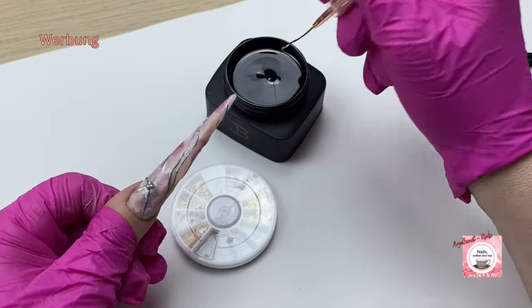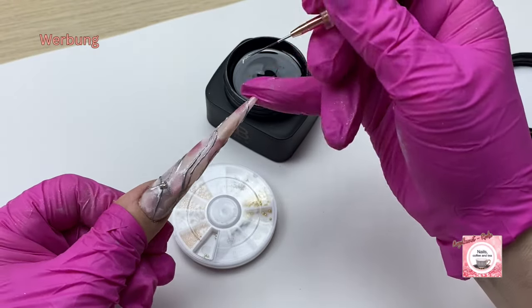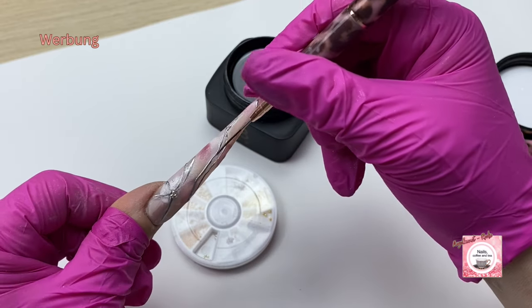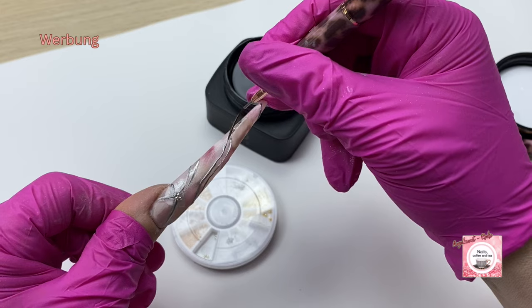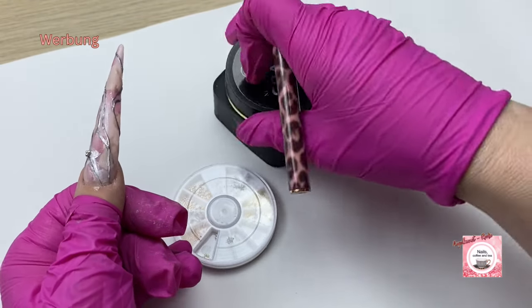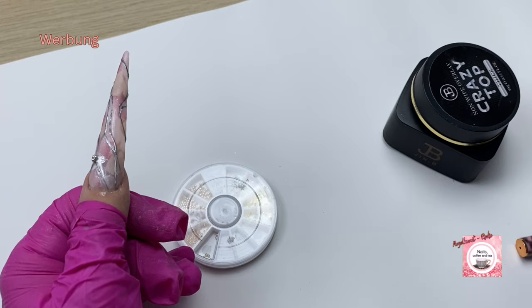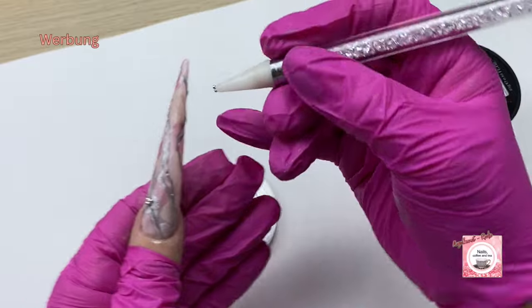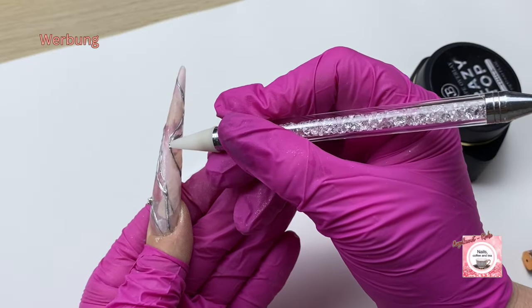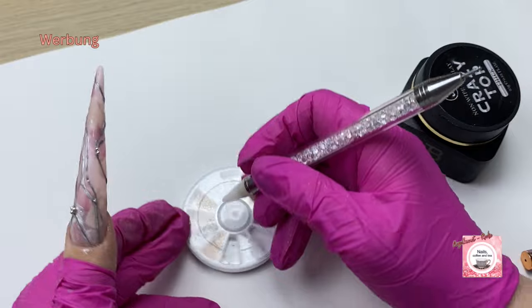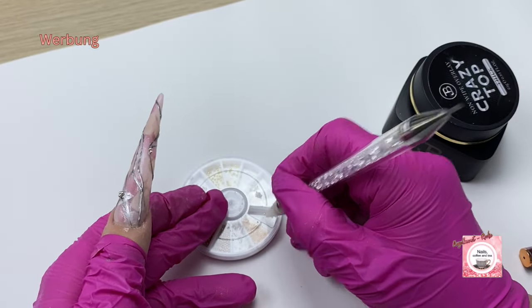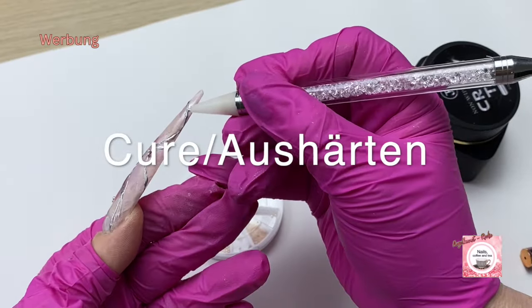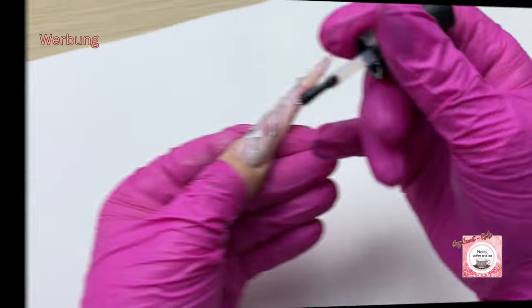As I said, everything gets traced - every single line. I have speech problems today, don't know what's wrong. Probably the sun - I have to get used to the sun again. So I'm placing a few pearls here, naturally in silver. I don't have many left, I've ordered new ones again. I hope they come soon. Then the whole thing naturally gets cured again.